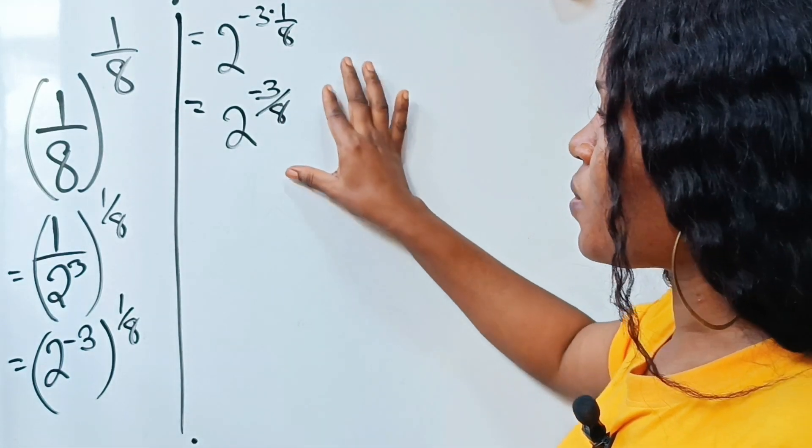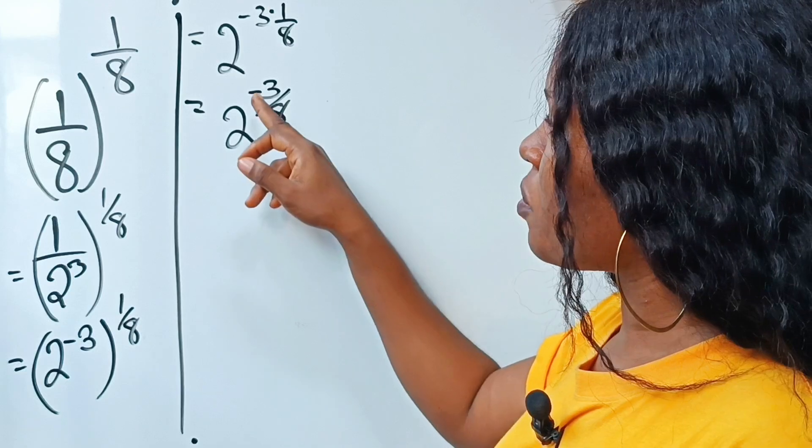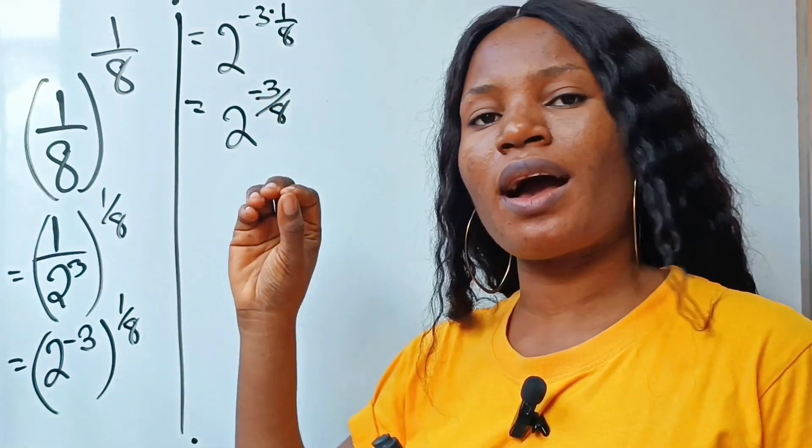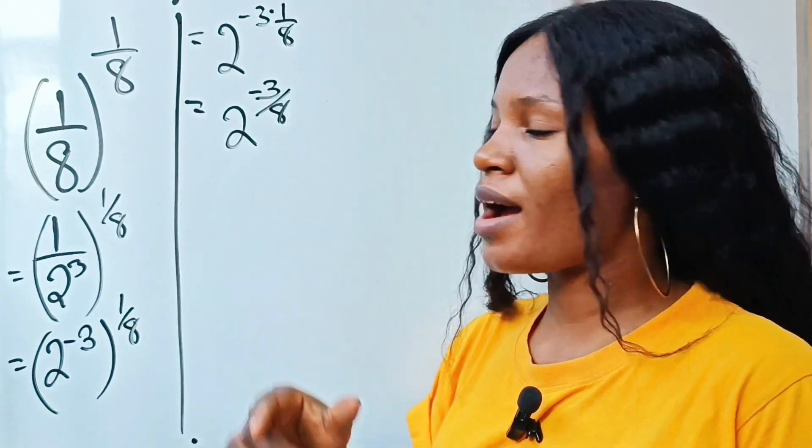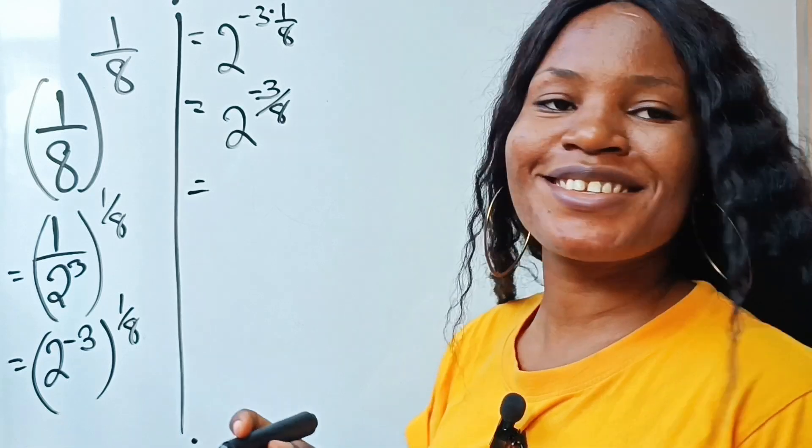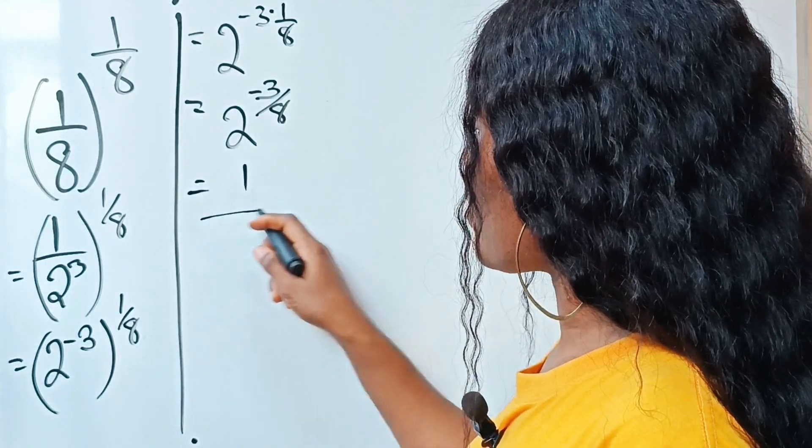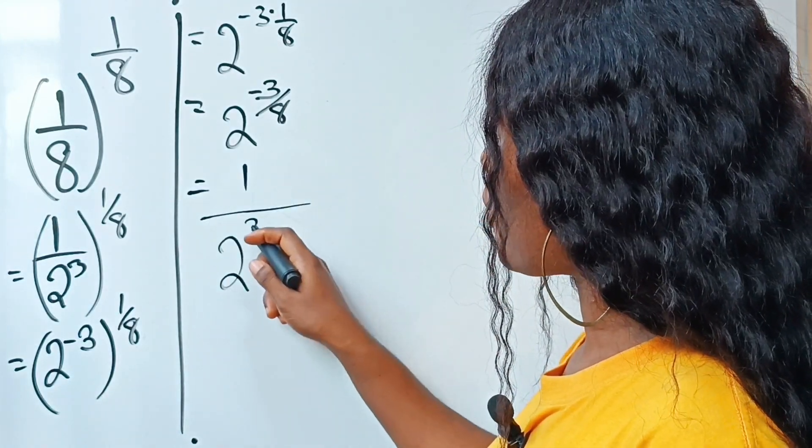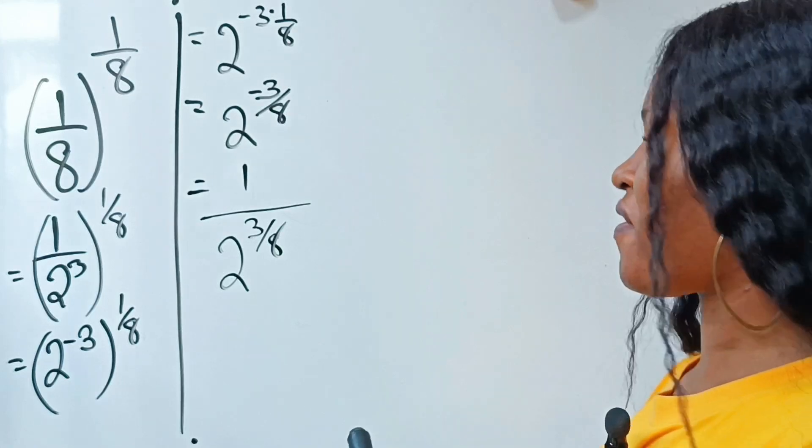Now, look at what we have here. For us to remove this minus sign, we have to introduce 1 over. So let's quickly do that. We write 1 divided by 2 to the power of 3 over 8.